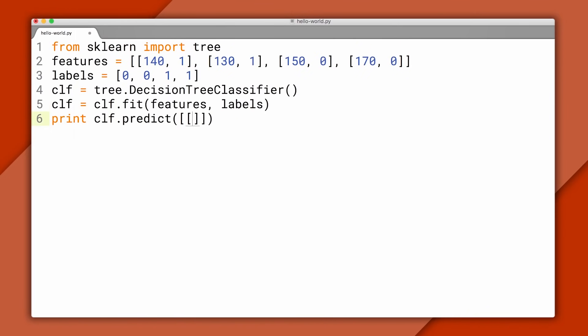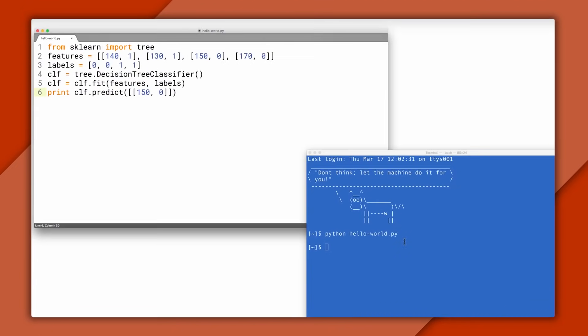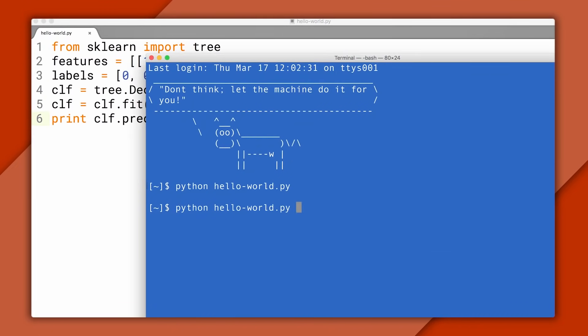The input to the classifier is the features for our new example. Let's say the fruit we want to classify is 150 grams and bumpy. The output will be a zero if it's an apple, or one if it's an orange. Before we hit enter and see what the classifier predicts, let's think for a sec.